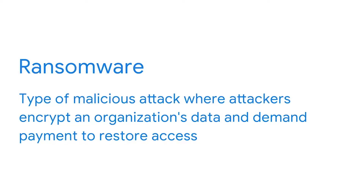Attackers often use Trojans to gain access and install another kind of malware called ransomware. Ransomware is a type of malicious attack where attackers encrypt an organization's data and demand payment to restore access. These attacks have become very common. A unique feature of ransomware is that attackers make themselves known to their targets — without doing this, they couldn't collect the money they demand. They normally decrypt the hidden data once the sum is paid, though there's no guarantee they won't return to demand more.